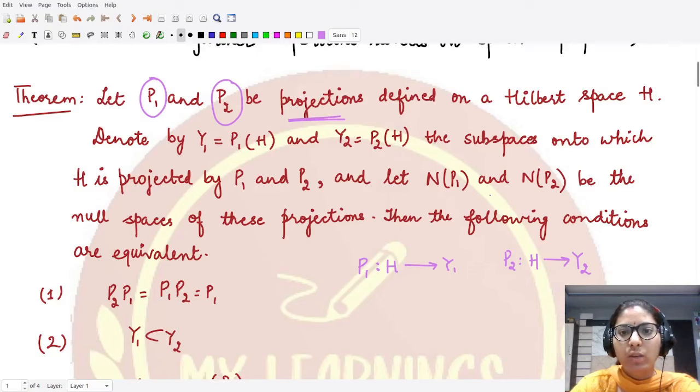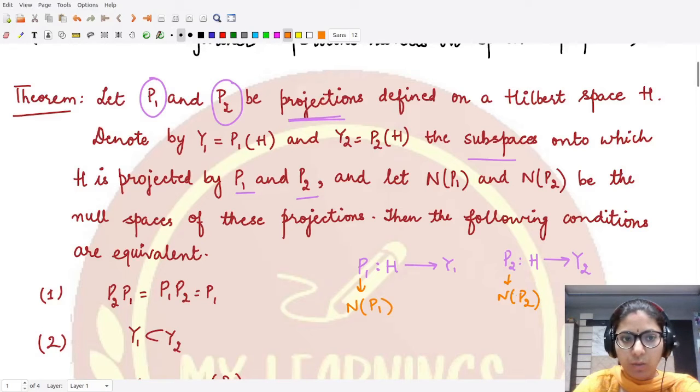Y₁ and Y₂ are the spaces onto which these projections are mapped. Corresponding to this projection, the first projection, we have the null space written N(P₁), and the null space corresponding to projection P₂ is N(P₂). They are saying that the following conditions are equivalent in this case, so we have these five conditions.